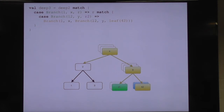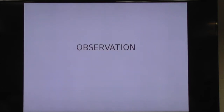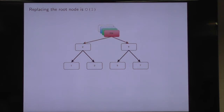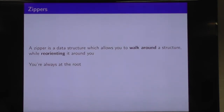We're going to solve this problem of walking around inside and manipulating our immutable data in such a way that we're not paying this horrible cost every single time. This technique is called a zipper, and it's based on the observation that replacing the root of the tree you can do in constant time — there's no spine above you that you need to rebuild back up. The key idea behind zippers is that they allow you to walk around inside a structure while reorienting it around you, such that you're always at a focus — a pseudo-root — that you can cheaply replace.